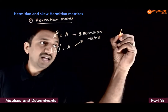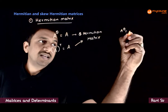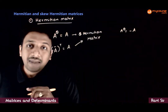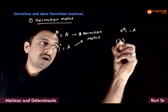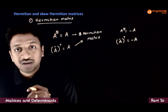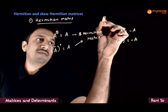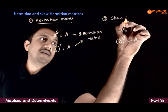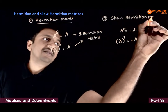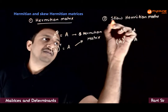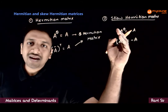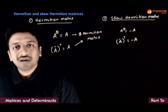In the other case, if A^θ is equal to minus of A — that is, if the conjugate transpose is equal to minus of the original matrix — then we call it a skew Hermitian matrix. So, Hermitian matrix: A^θ = A. Skew Hermitian matrix: A^θ = −A.